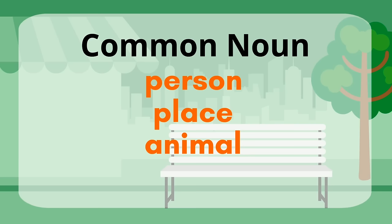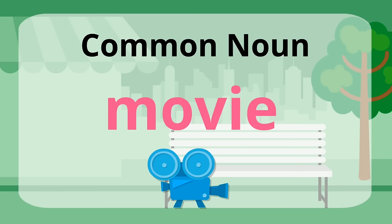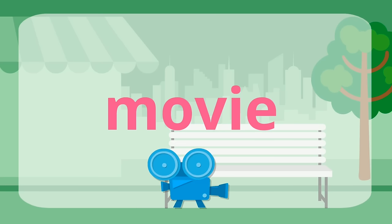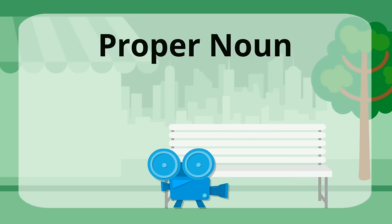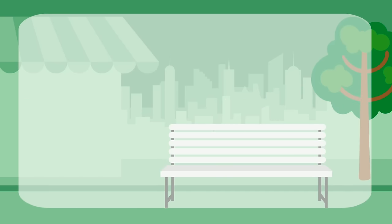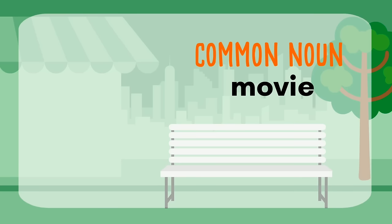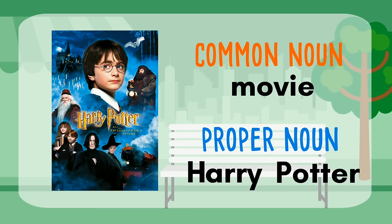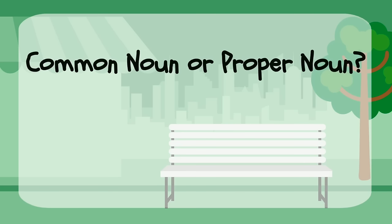Which common noun are we missing? We've covered person, place, animal — oh yes, a thing! Let's come up with a thing common noun. How about a movie? Now we need a proper noun for a movie. How about Harry Potter? So a movie is a common noun because it's a thing, and Harry Potter is a proper noun because it's the name of a movie. Don't forget to capitalize the first letter of each word in that proper noun.